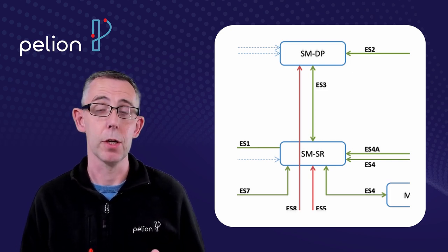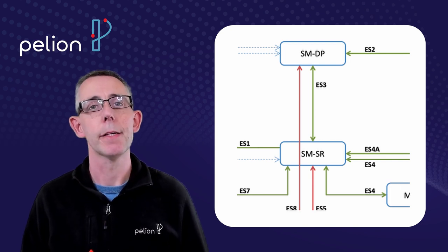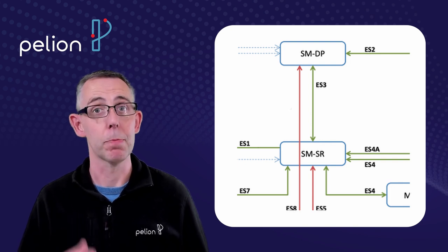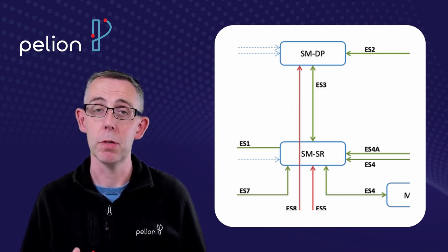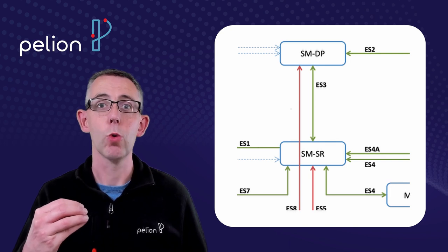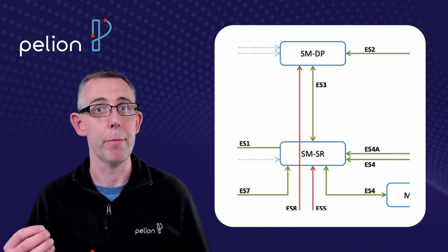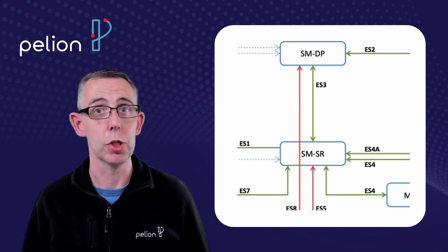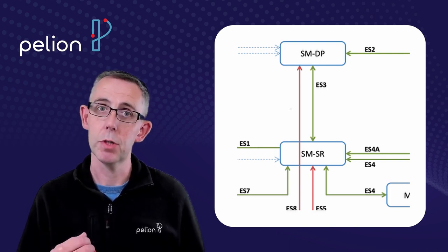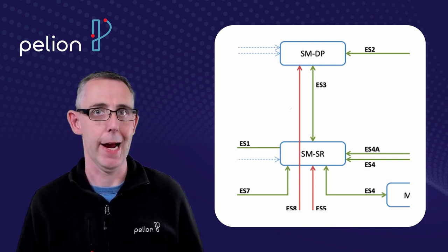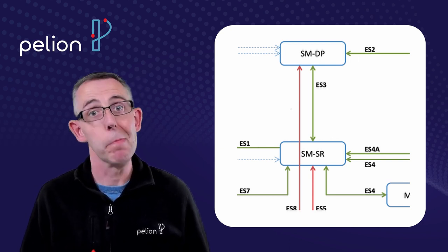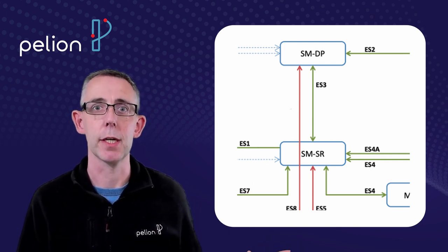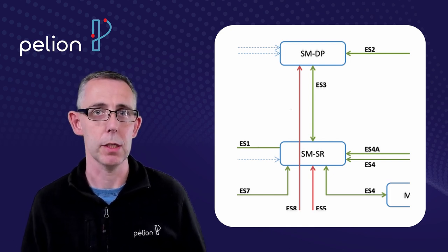That's the subscription manager component of this system and the SMDP, that's the subscription manager data preparation block and just below it the subscription manager secure routing block. The data preparation block holds the profiles that the mobile network operator has prepared so that you can make use of them. You can have them downloaded to your eSIM when you're ready and the secure routing performs that action.